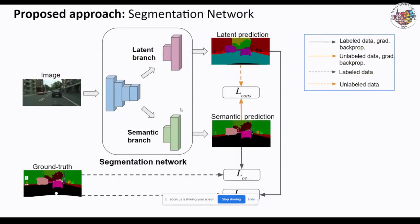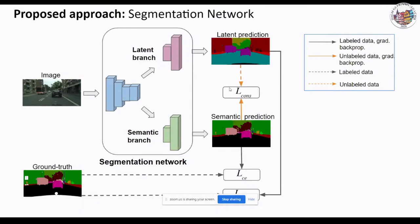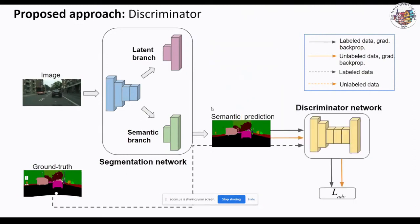To this end, we introduce a two-branch segmentation network trained on labeled and unlabeled images jointly in an end-to-end fashion. While the semantic branch learns the original semantic segmentation task, the purpose of the latent branch is to infer latent classes which can be learned reliably using only a small set of labeled data. In contrast to the semantic branch, the latent branch is trained on labeled data only, and on unlabeled images it provides additional supervision signals to train the semantic branch. We also incorporate a discriminator network to encourage the semantic branch to produce more ground-truth-like predictions.